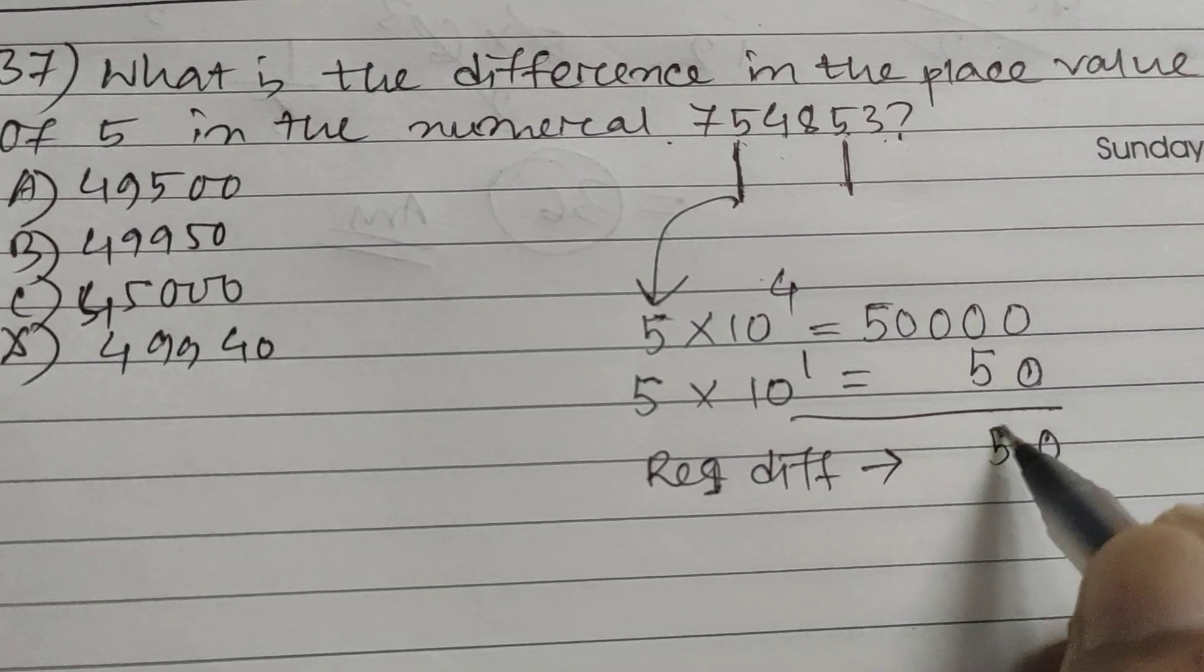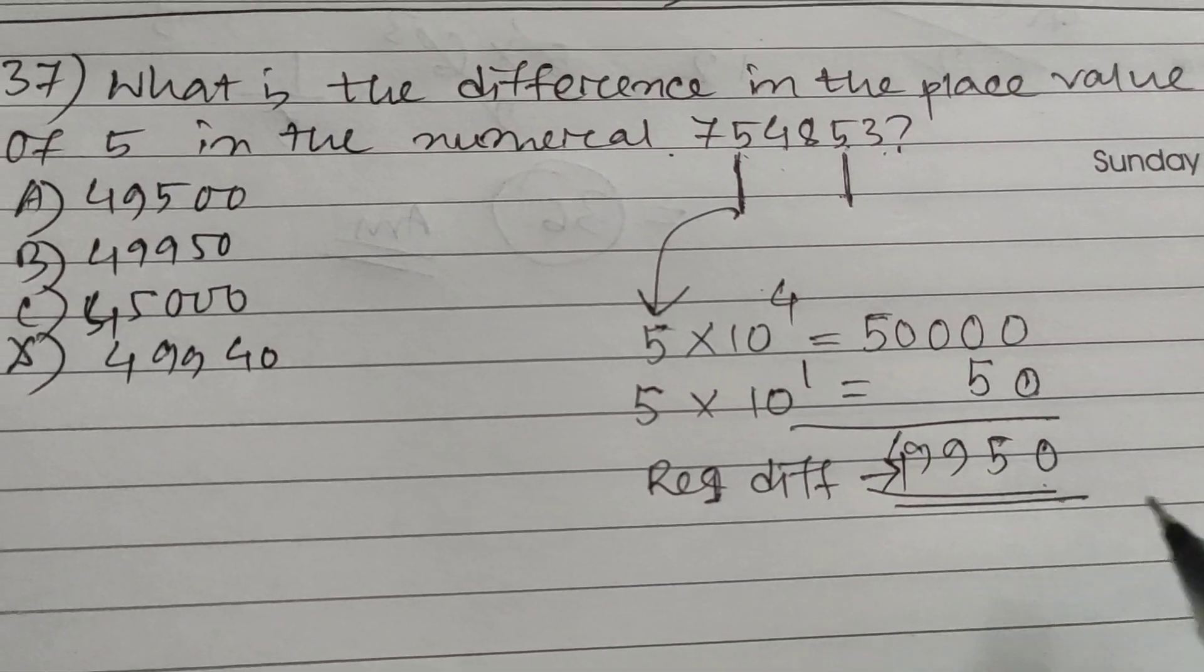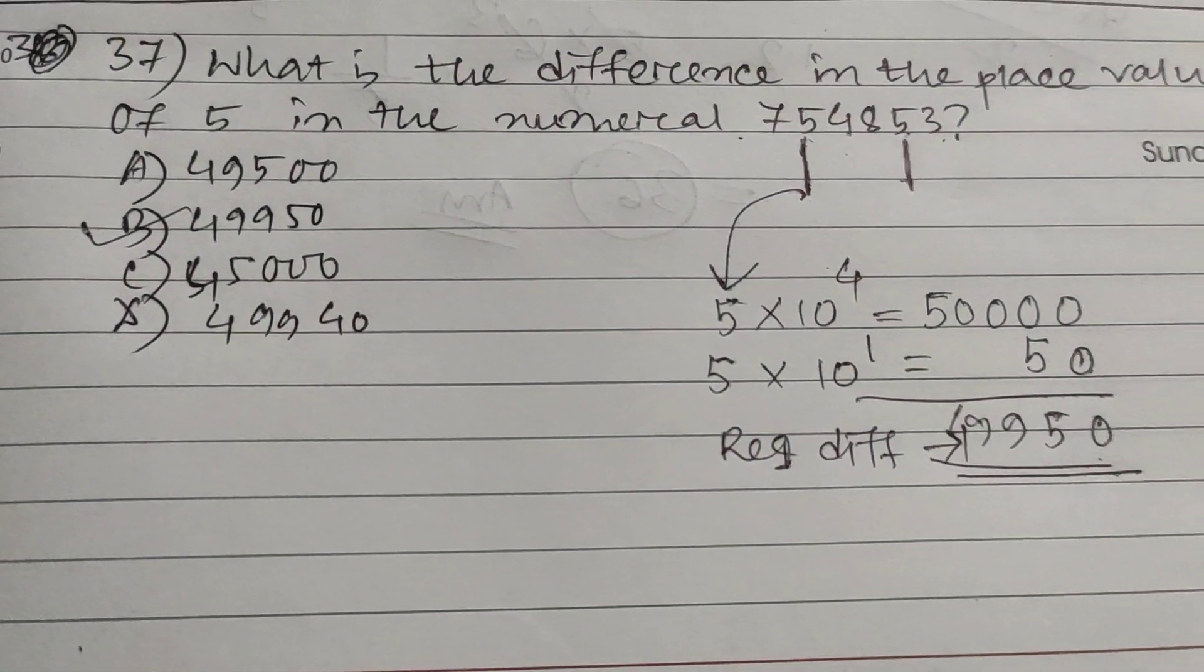Zero five nine nine four... four nine nine five zero. So 49,950 is your right choice.